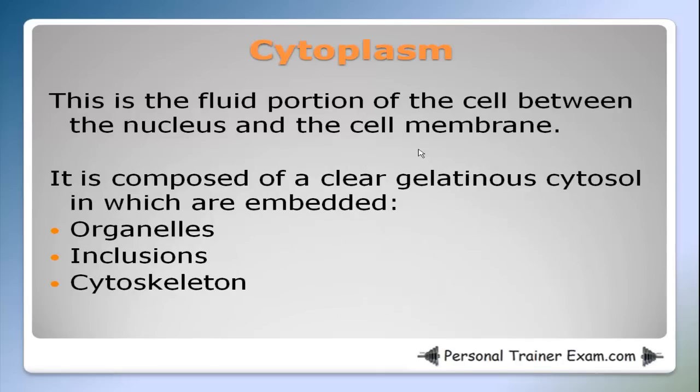Now I'm going to give you a brief review of what cytoplasm is. Cytoplasm is the fluid portion of the cell between the nucleus and the cell membrane. It is composed of a clear gelatinous cytosol in which are embedded organelles, inclusions, and the cytoskeleton.